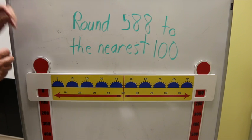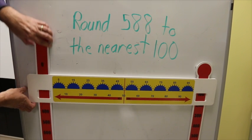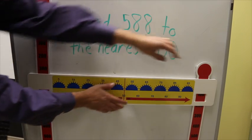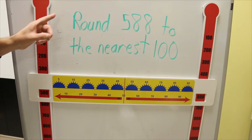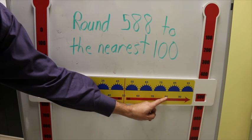Like all my manipulatives, you want to round by moving the slides first. 500. Each line here is worth one. So over here would be 600. And so to answer this question, round 588 to the nearest hundred.